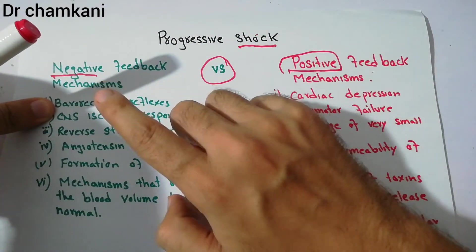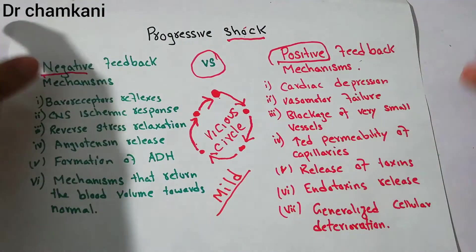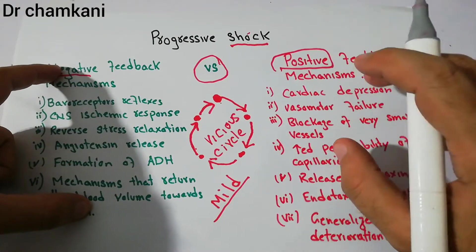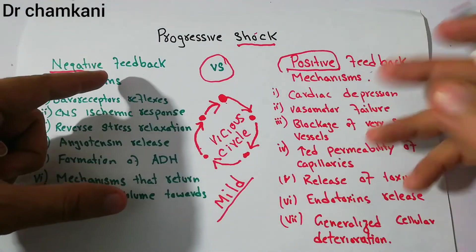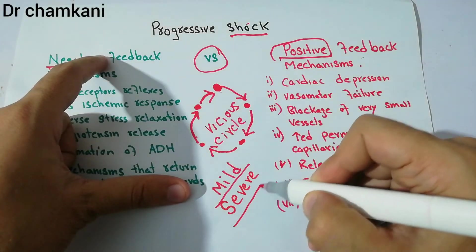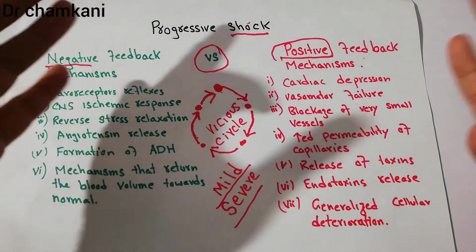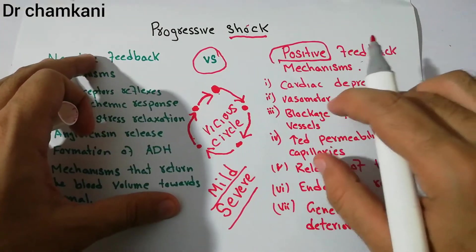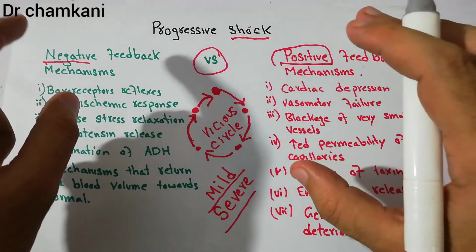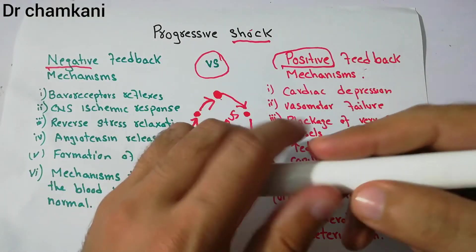The negative feedback mechanisms are stronger only when the shock is mild. For example, with a small hemorrhage, the changes in arterial circulation can be easily recovered by these mechanisms. But the chances of the positive feedback mechanisms being stronger than the negative mechanisms occur when the initial presentation of the shock is very severe — for example, severe myocardial infarction leading to cardiogenic shock where the heart is initially unable to pump and the patient cannot reach a hospital in time. In contrast, with a small loss of blood or plasma, the negative feedback mechanisms will be able to compensate and the patient will survive.